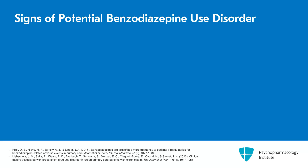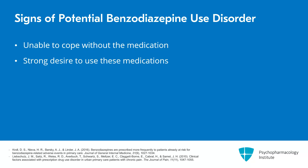If a patient feels they cannot cope at all without the medication — needing more of it, running out early, or showing other signs of loss of control — that is concerning, though certainly some patients have been given these medications because they cannot currently function without additional pharmacotherapy and psychotherapy support. Additionally, if patients describe a strong desire or urge to use, especially if that urge drives them to use in a way not as prescribed — running out early, getting prescriptions from multiple prescribers — those would all be concerning signs of moving into misuse and potential use disorder.